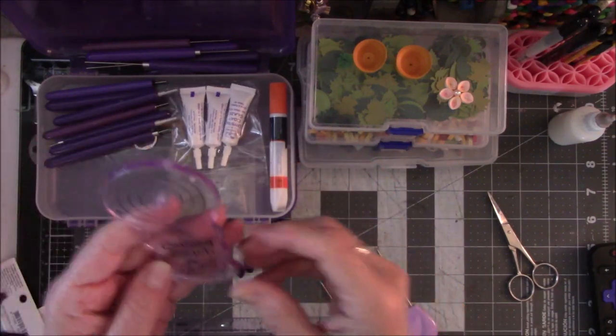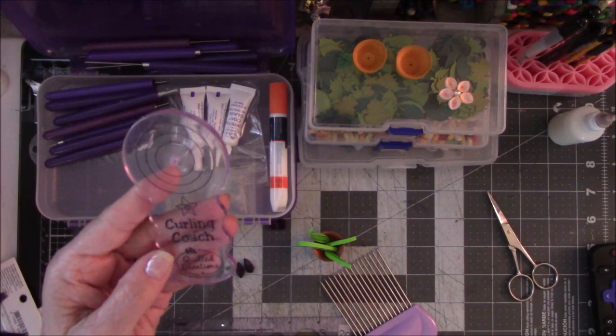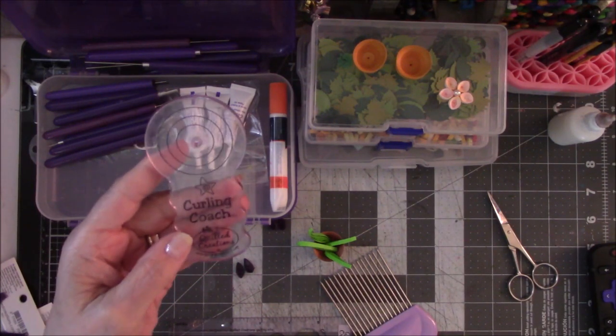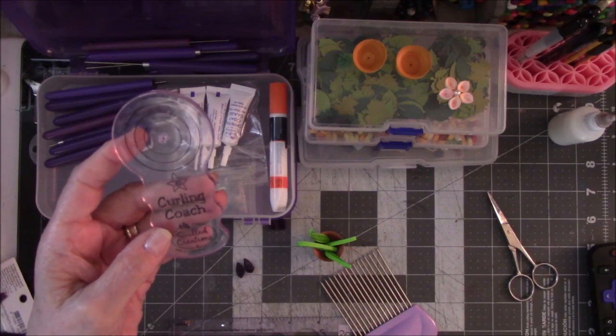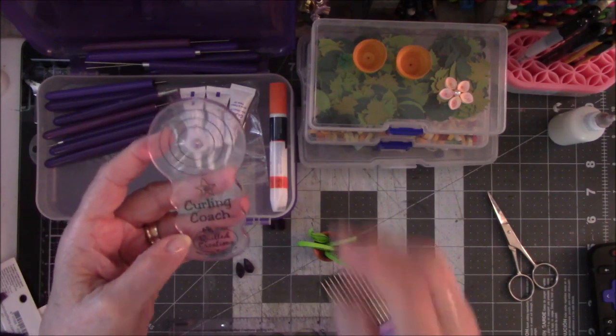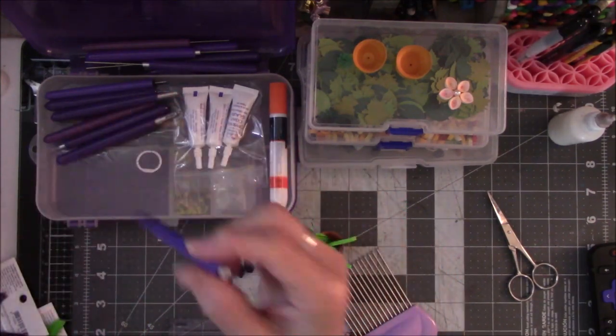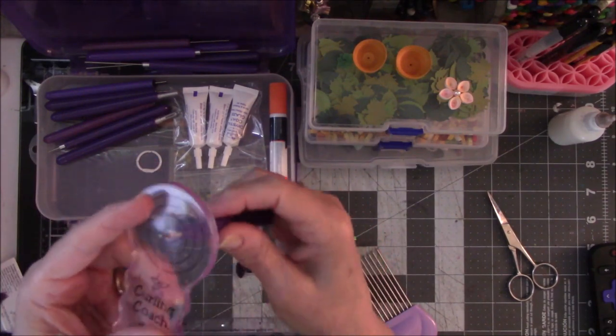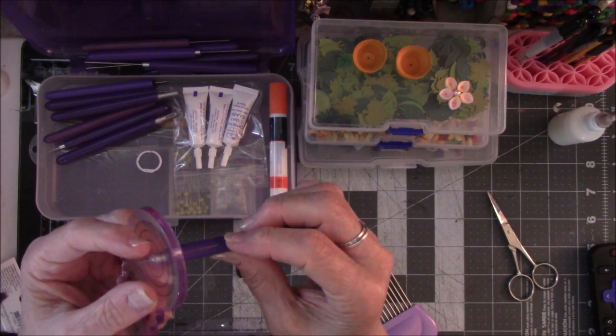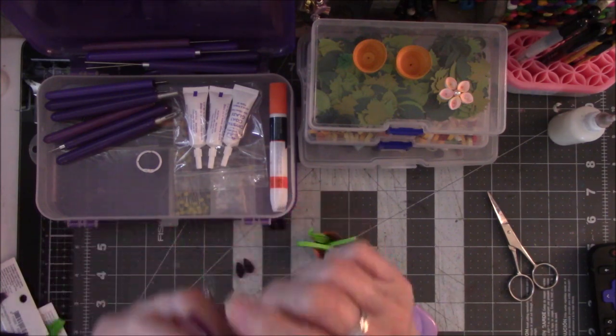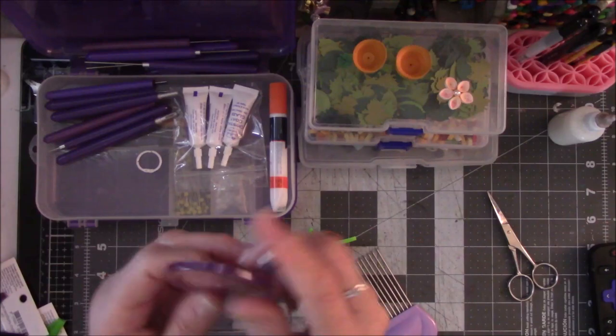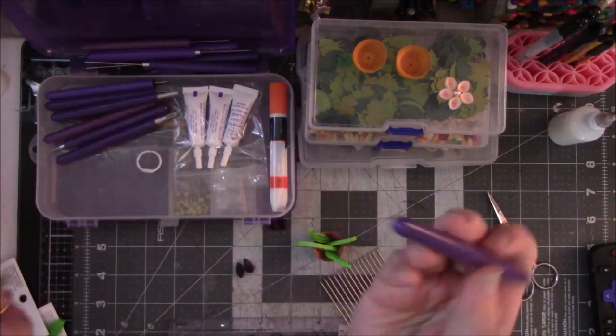This is called a Quilling Coach, and I will show you how to use it, maybe not in this video but a future video—well, maybe in this one, we'll see. What you need is a longer stem on this because it goes through the hole. Then you put the paper on and you twirl. Do I have any paper handy? Of course not. I'll show you a little later.